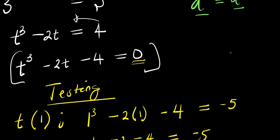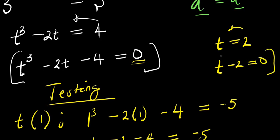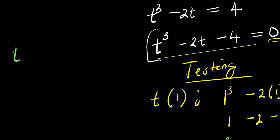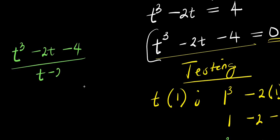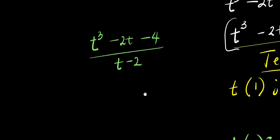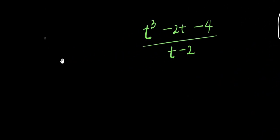Since t = 2 is a solution, we can write the factor (t − 2) = 0. To find the other values of t, I need to divide t³ − 2t − 4 by (t − 2). We will make use of the synthetic division method.